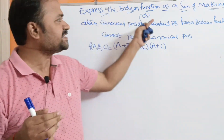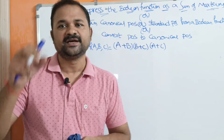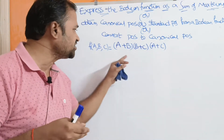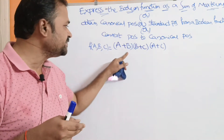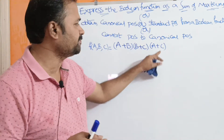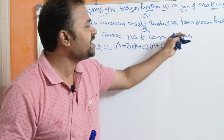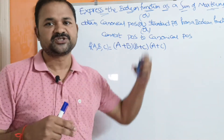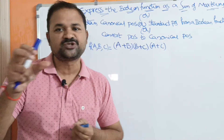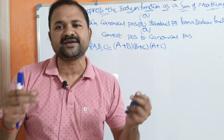Let us discuss expressing a boolean function as a sum of max terms. A max term means that term should contain all the literals or variables. If we take this function, in the first term C is missing, in the second term A is missing, and in the third term B is missing. We want to obtain canonical POS or standard POS, which means product of max terms where each max term should contain all the literals.